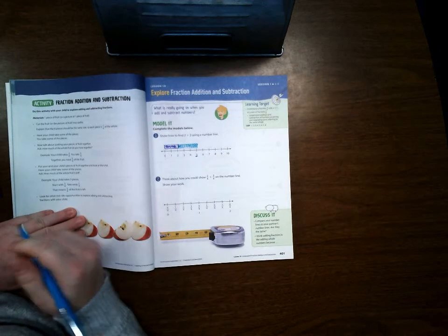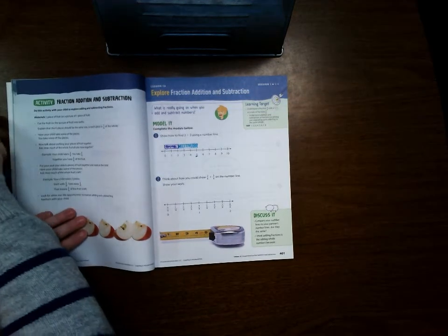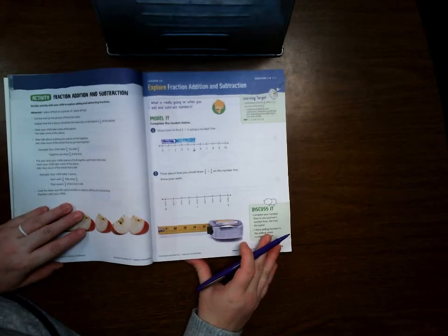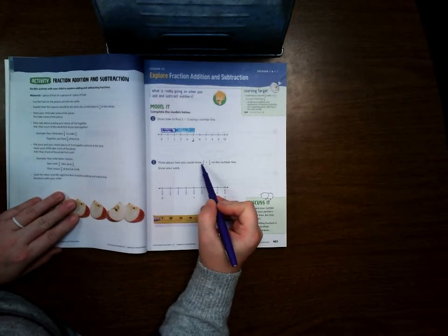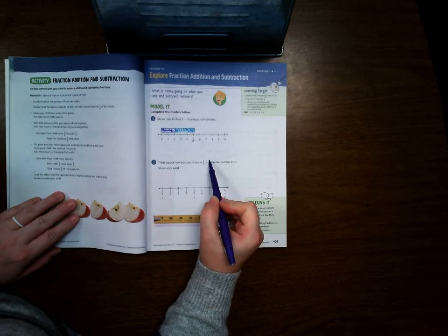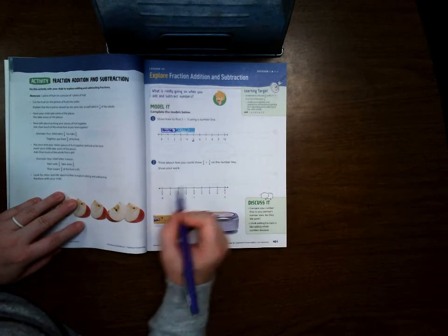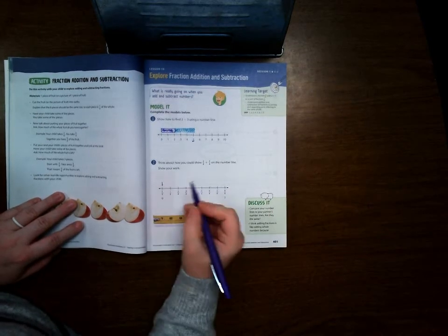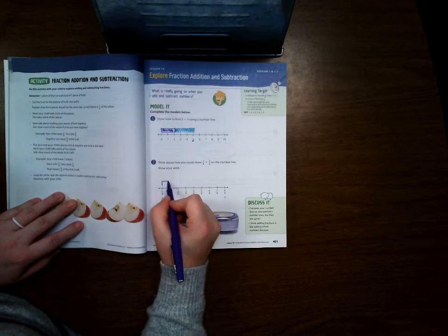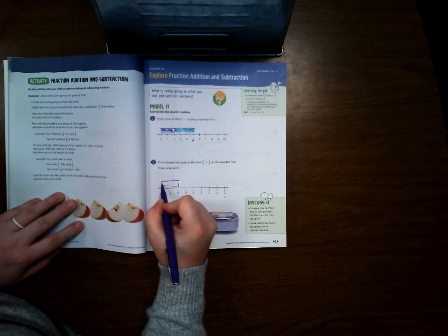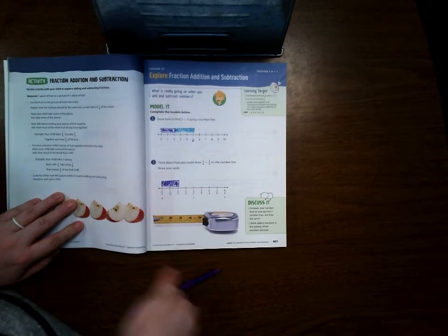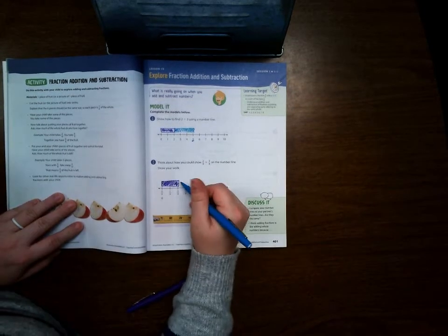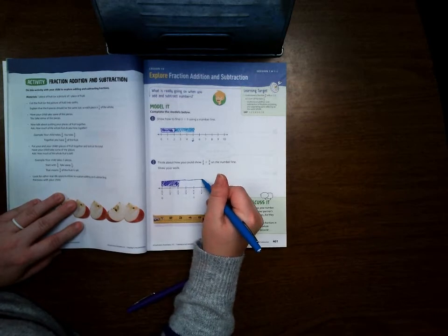So then our next problem here says think about how you could show 2/4 plus 3/4 on the number line. So obviously we're going to start at 0. Here is our 2/4, and then we're going to add 3/4 to it. So 1/4, 2/4, 3/4.